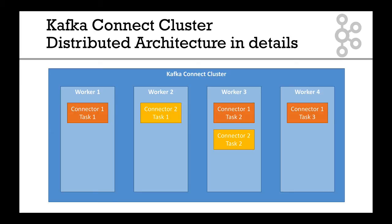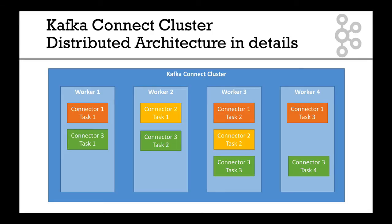Here's our second connector — it could be a source connector again, and it has two tasks: task one and task two. Here is our third connector — it could be a sink connector, and it has four tasks. As you can see, each of these tasks are run on worker one, two, three, and four.